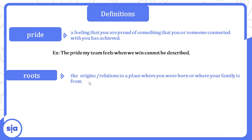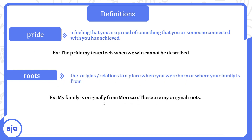'Roots' means the origins — relations to a place where you were born or where your family is from. Roots معناها الجذور أو الأصول. Example: My family is originally from Morocco — these are my original roots. أنا عيلتي من الأصل من المغرب، ودي جذوري الأصلية هناك.